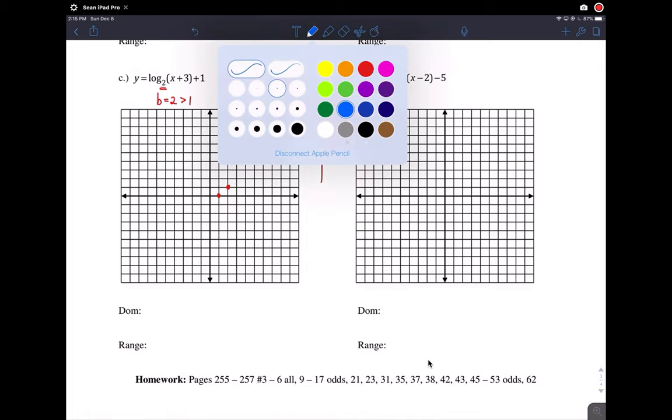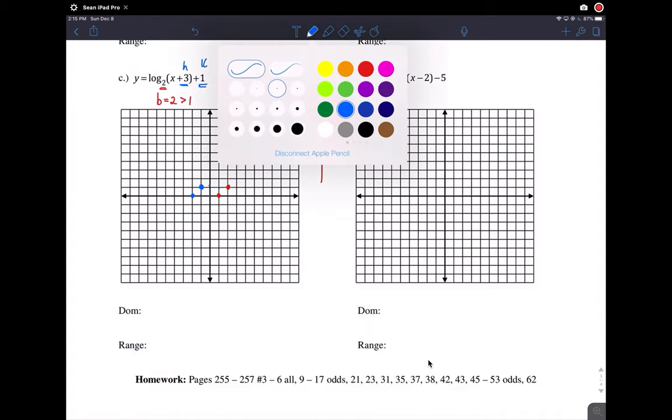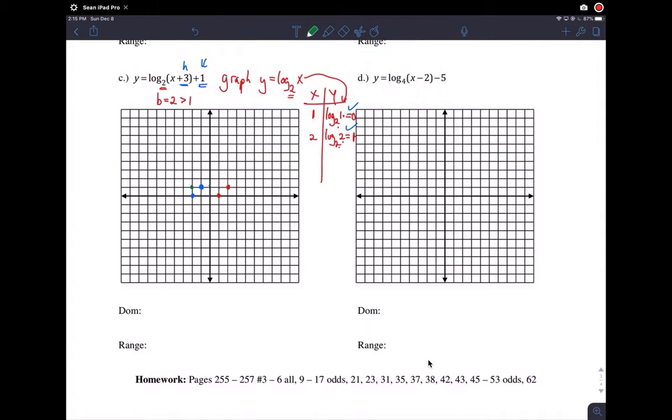So we have the first two points that we graphed from this. These two we've graphed them, and now we want to do the translation. So again, this is our h value, this is our k value, and a plus 3 h value actually means go to the left 3. So we're going to translate this point left 3 and this point left 3. And then the k value says go up 1. So we're going to go up 1 here and up 1 here. So the green points represent our final translated function.